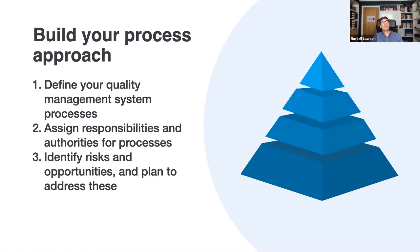The third key element is to identify risks and opportunities and plan to address them. Risk-based thinking — which is what ISO 9001 is built on — requires organizations to determine risks and opportunities to processes, to products and services, and to the quality management system itself. You then take proportionate steps to address any of these risks. This is why you need to monitor and measure the performance of your processes — so you know whether there's an increase in risk in the way they're run.